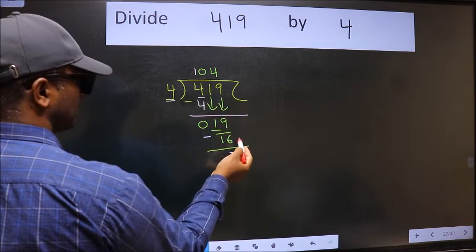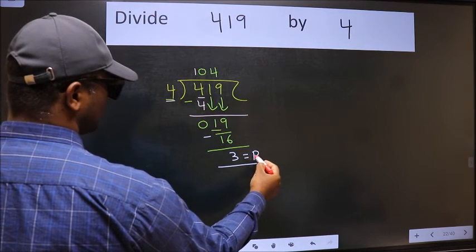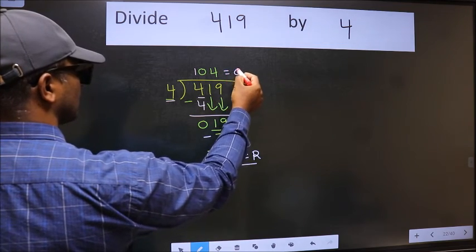No more numbers to bring down. So we stop here. This is our remainder and this is our quotient.